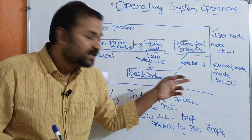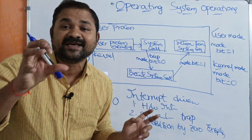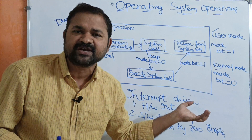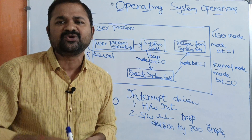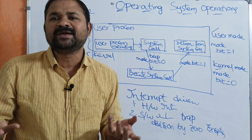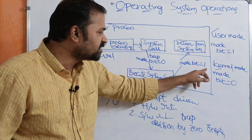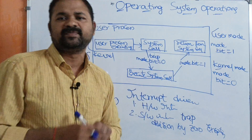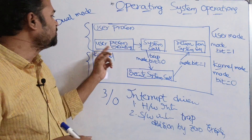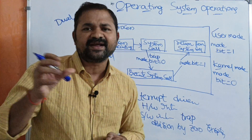The system call is executed in kernel mode because it is the most privileged instruction. Once the system call execution is over, the CPU has to execute the remaining instructions of the program. At that point, the mode bit is changed from zero to one — return from the system call — and the CPU starts executing the remaining instructions of the user process.